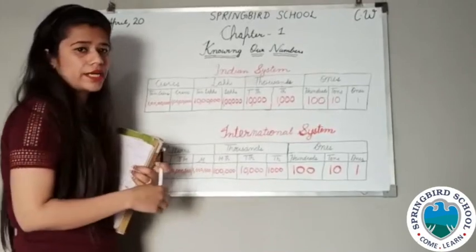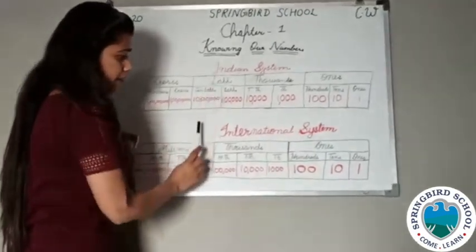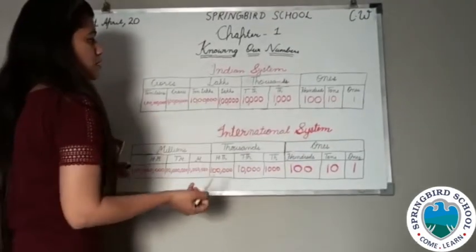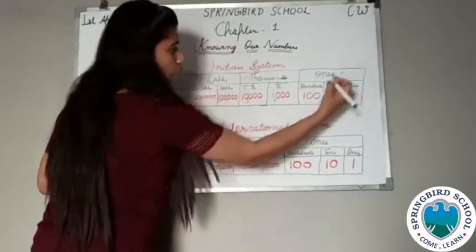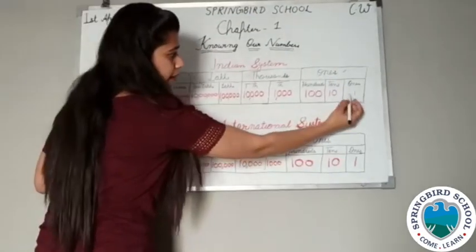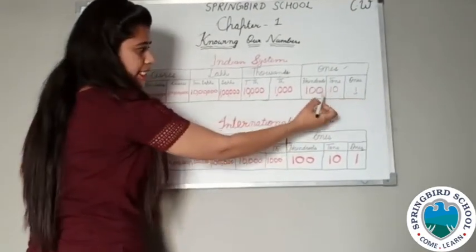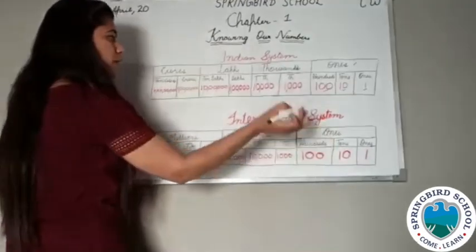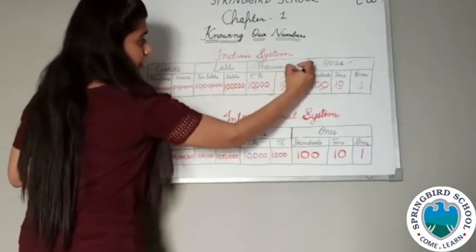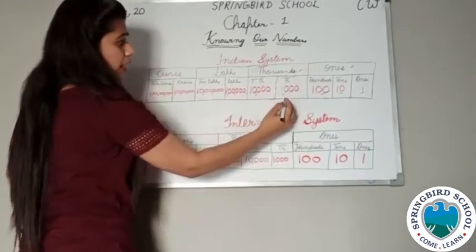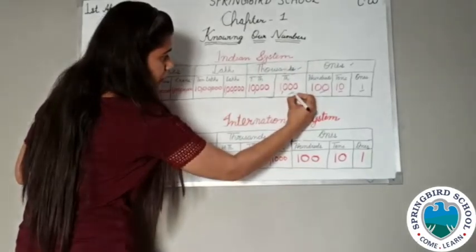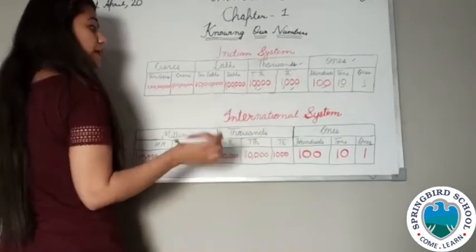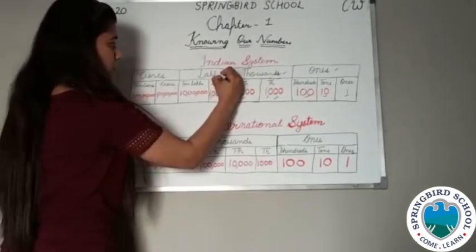Firstly we will study in detail about the Indian system, and then we will discuss the international system. In the Indian system, the first head is the ones head. In the ones head: first place is ones, second place is tens, third place is hundreds. After that the second head comes — the thousands head. In the thousands head, the first place is thousands, and the second is ten thousands.